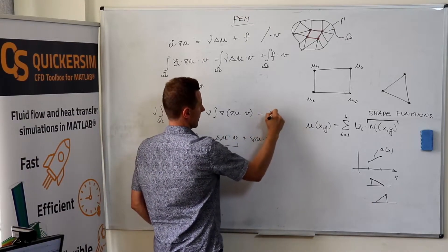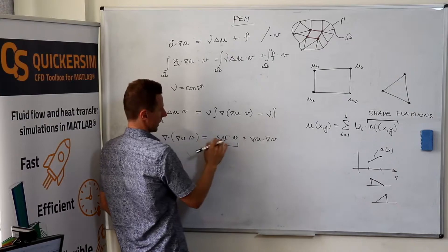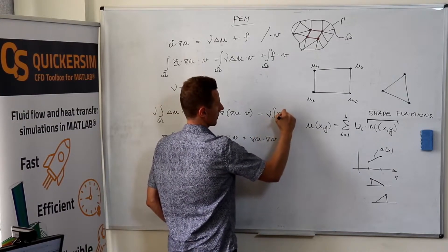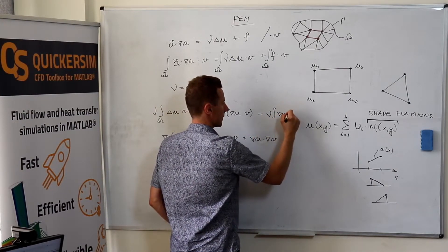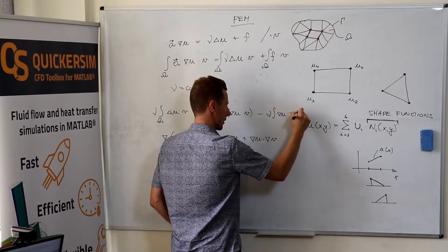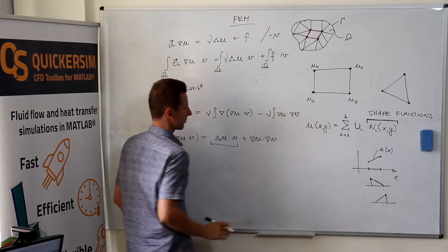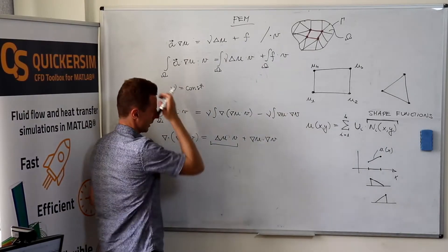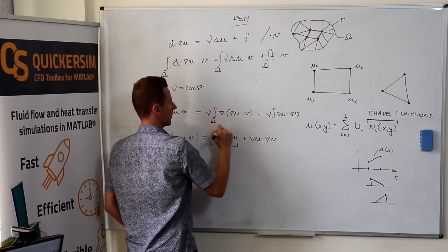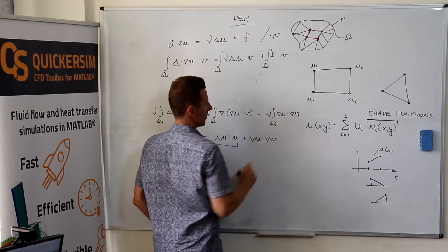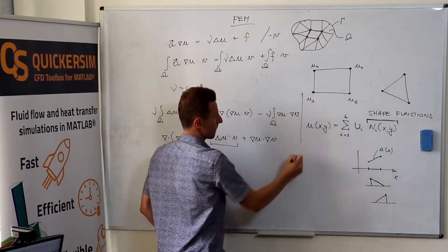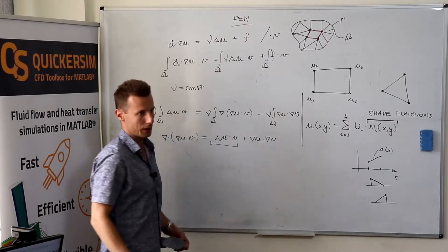minus gradient of u, strictly speaking I think it should be written like that. Forget it for a minute. Omega. Okay.